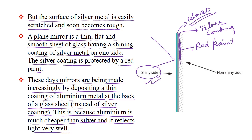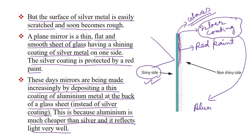आजकल जो भी market में mirror मिलता है उसमें silver coating नहीं होता, क्योंकि silver की coating बहुत मंहगी होती है. Silver की तुलना में aluminium बहुत सस्ता है, इसलिए aluminium coating का उपयोग किया जाता है, और इसकी reflecting quality भी बहुत अच्छी है.